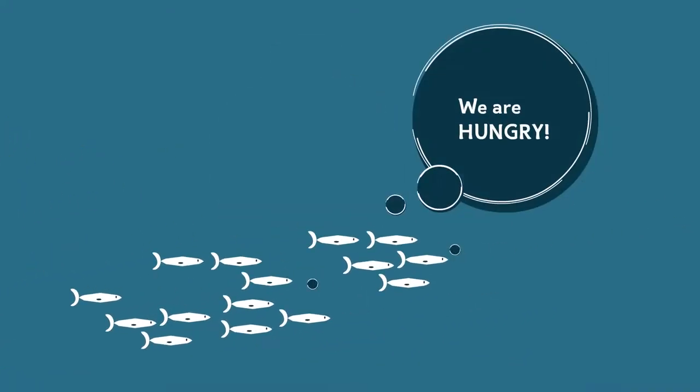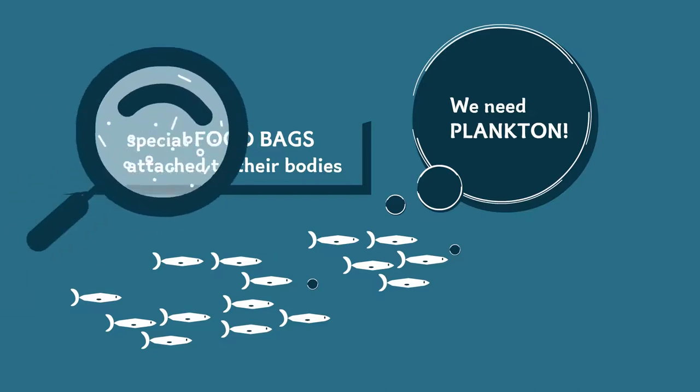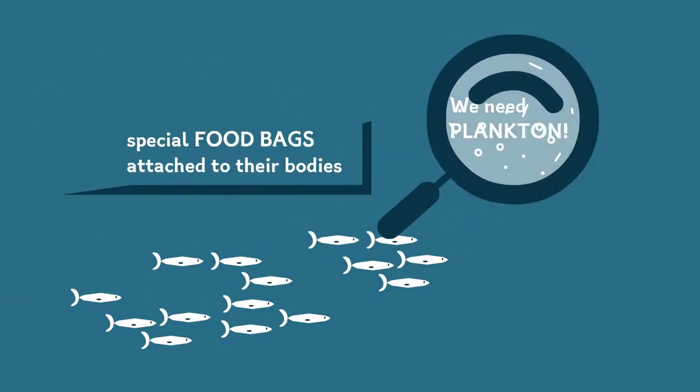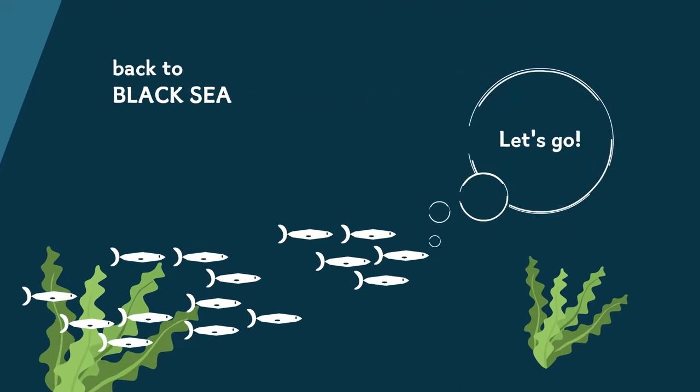How about food? Well, the first few days, they can rely on these special food bags attached to their bodies. Yet, they use them up very quickly. Then, the young sturgeons need to find plankton, tiny river organisms. They also need other small animals to feed on. And this is just the beginning, since it's time for the long journey to the sea.